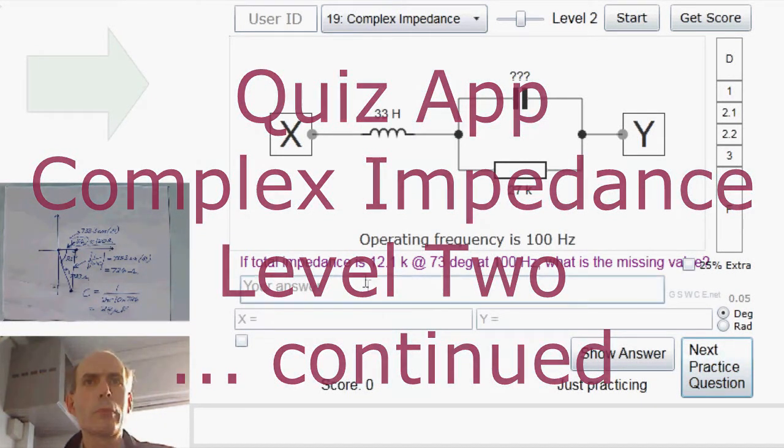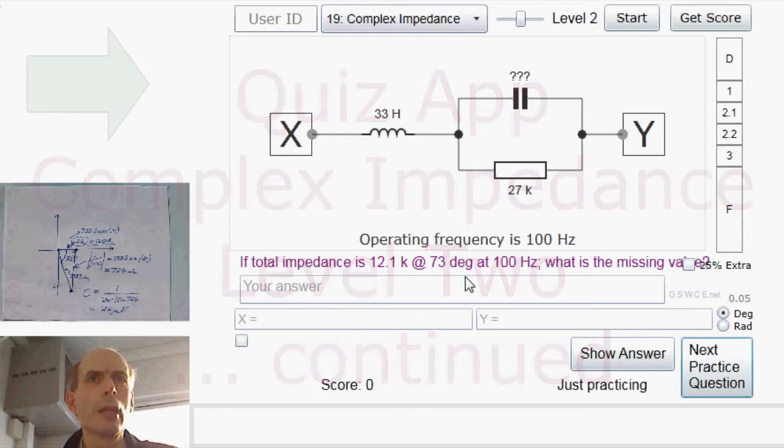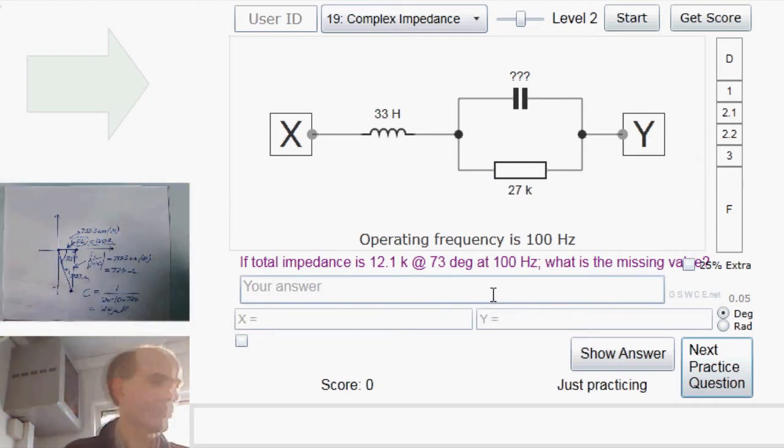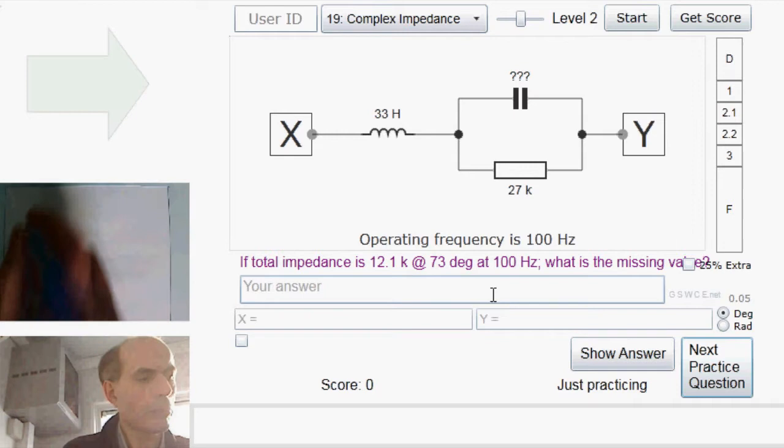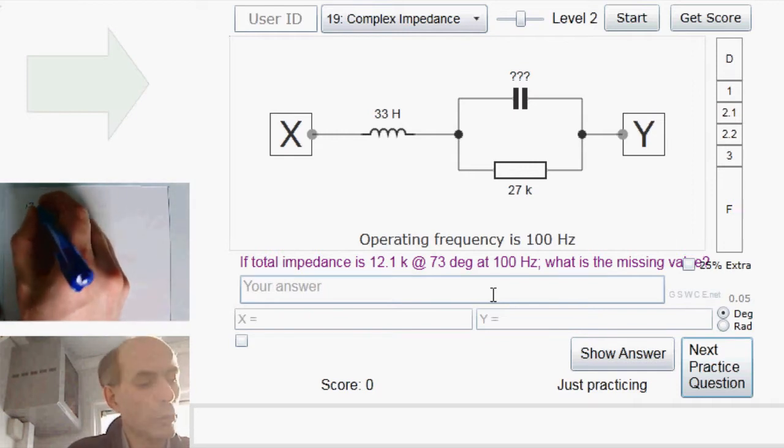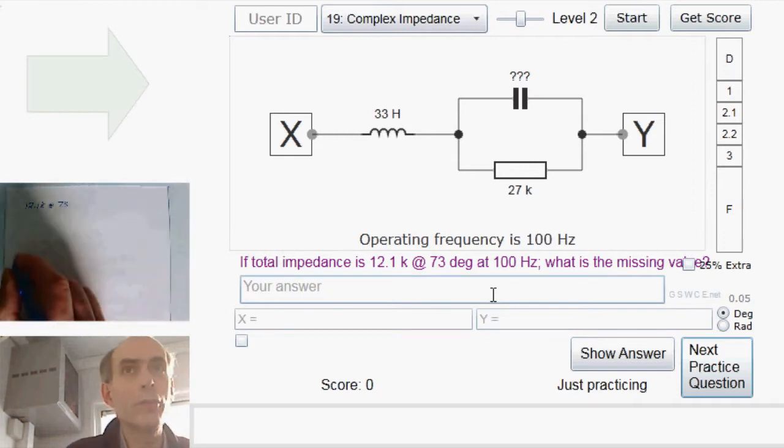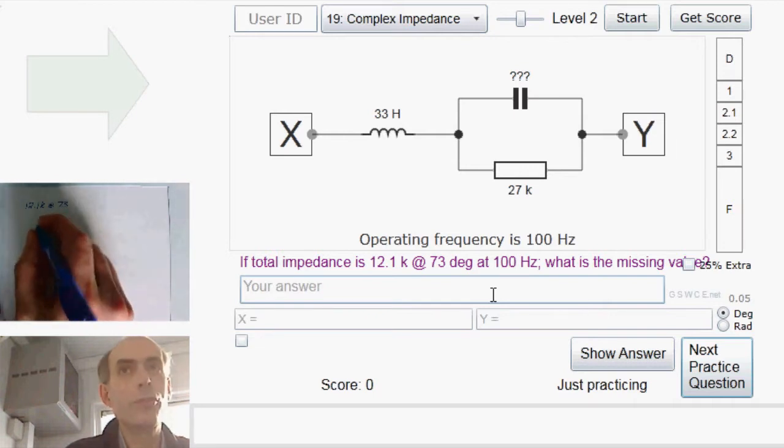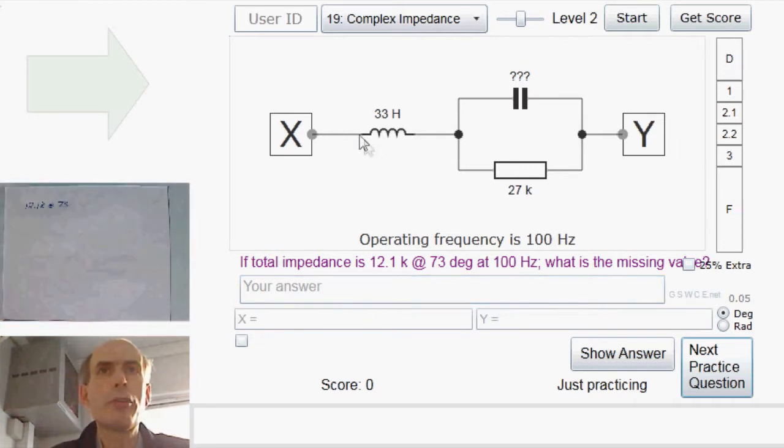OK, here we're given the total impedance, and we want to know the missing value, so the value of this capacitor. Total impedance is 12.1k at 73 degrees, and we know that is the sum of the impedance of an inductor here, and an unknown capacitor in parallel with that resistor there.